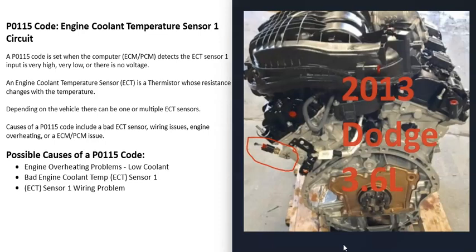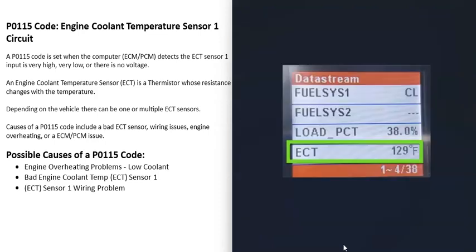These sensors are what's called a thermistor — a resistor whose resistance changes as the temperature changes. If you have an OBD2 scan tool with live data or data stream, you can use that to test the sensor. Go in and select the ECT sensor and check what temperature it's reporting. For a first test, if the engine has been off for at least an hour or two, check the reading and see if it's close to the ambient temperature outside.